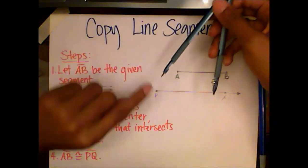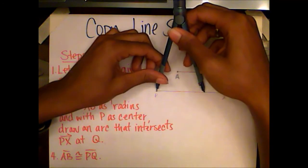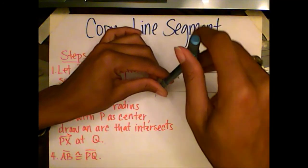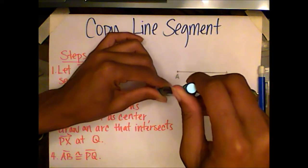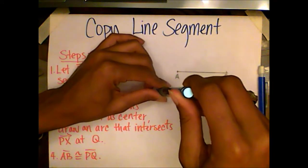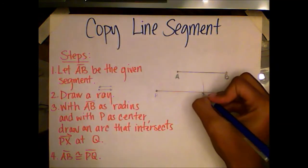Now we're going to take the pointy tip again, and we're going to put it in point P. And we're going to draw an arc that intersects ray PX. And that's an arc. At this intersection, we're going to label point Q.